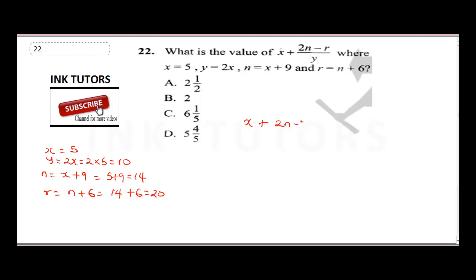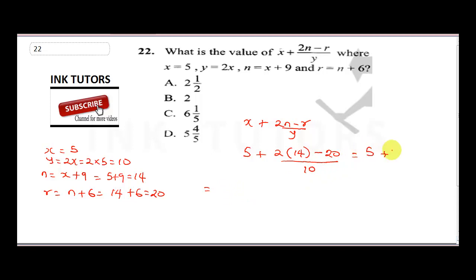The expression is x plus 2n minus r, all over y. Substituting: 5 plus 2 times 14 minus 20, all divided by 10. This simplifies to 5 plus 28 minus 20 over 10.